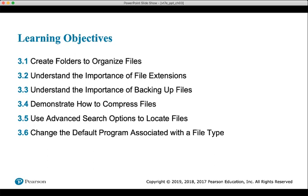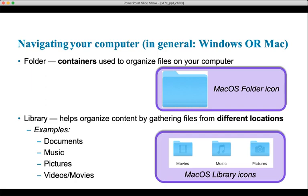First, let's talk about folders. Folders on your computer are the very rudimentary basis of file structure. They are containers used to organize files on your computer. Here we have an icon of the Mac OS folder, and the Windows folder looks very similar. On a side note, this is what is called a skeuomorphic icon — an icon that is a representation in digital form of a real-world object. So even though this is not an actual paper folder, on your computer it resembles one. That's called a skeuomorphic representation.